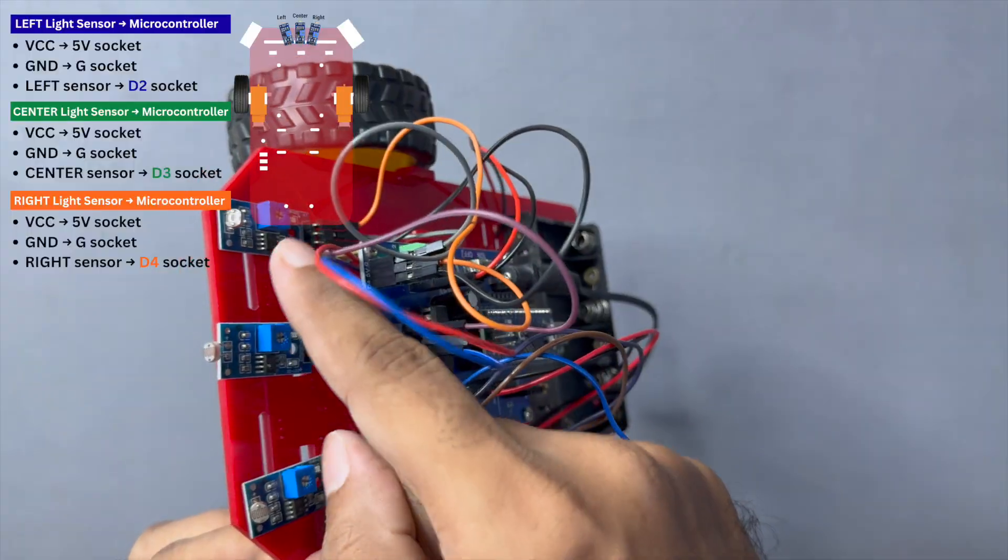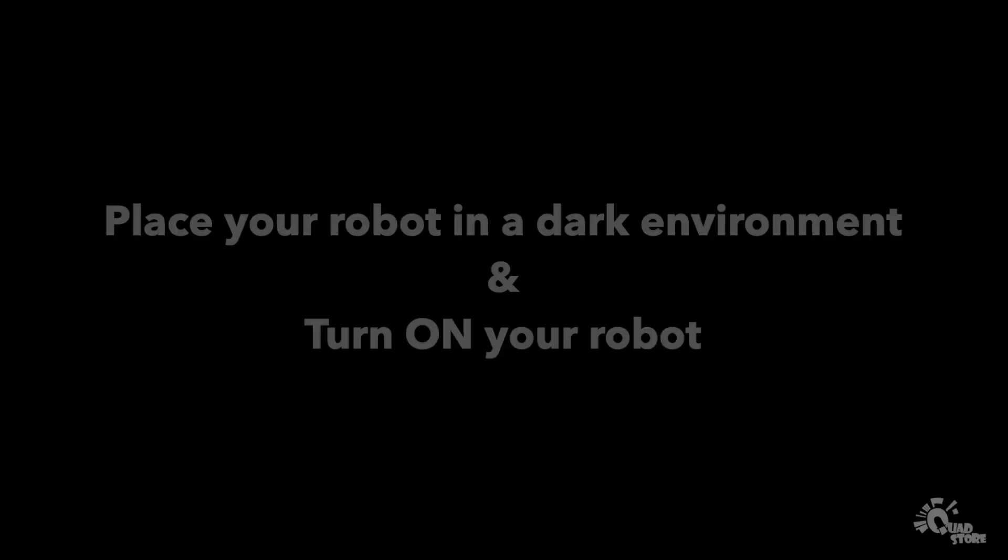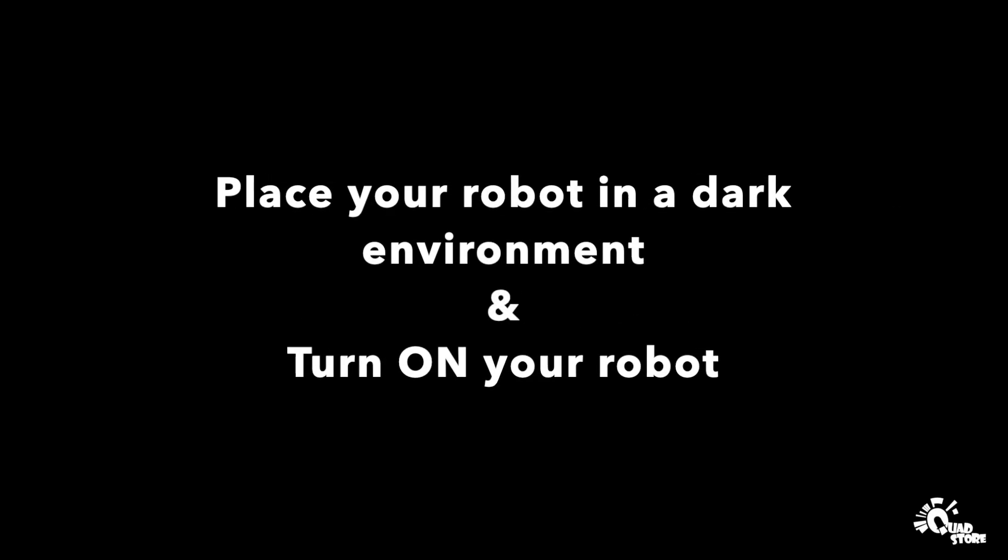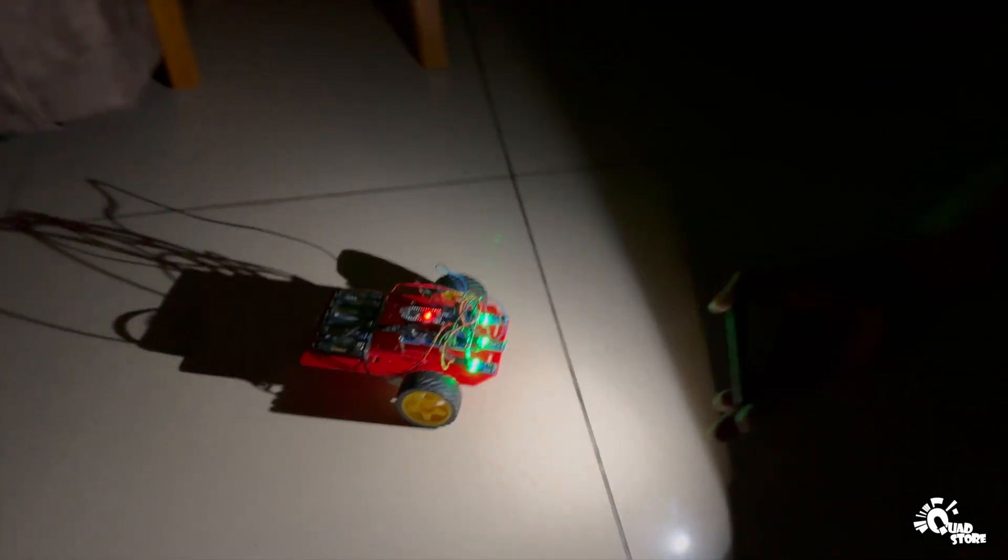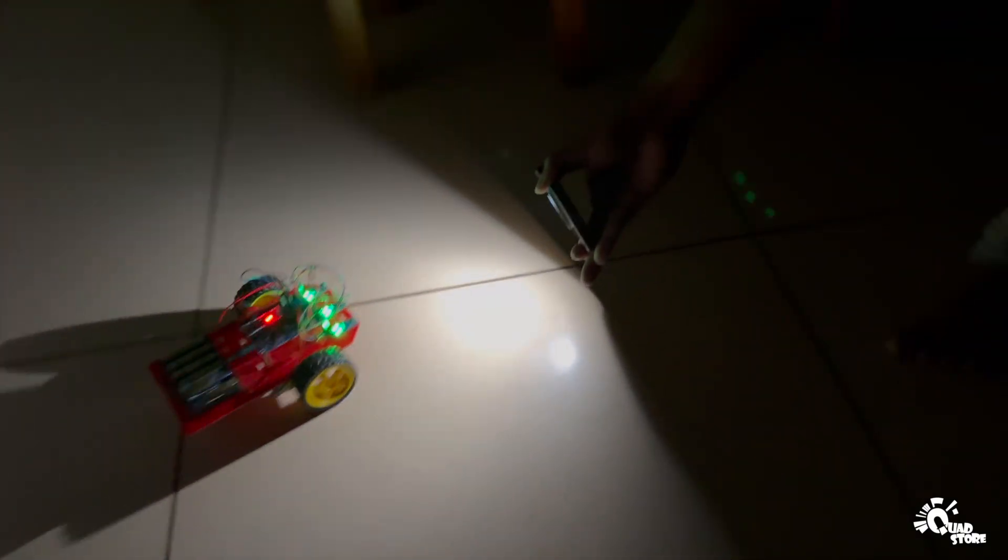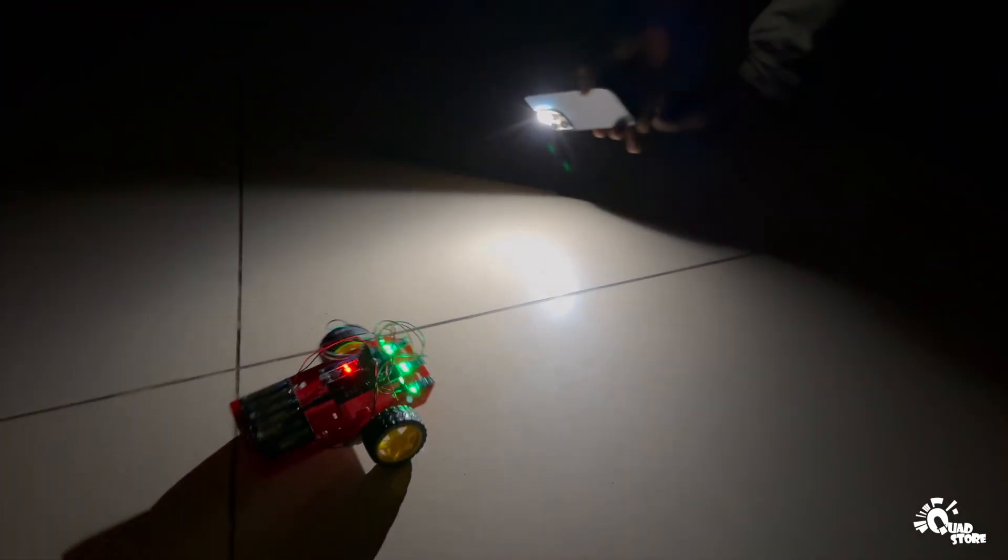Your light following robot is now ready to operate. Place the robot in a dark environment and turn it on. Point a light source toward it. The robot should start moving toward the light. To make the robot move straight forward, ensure the light falls on all three sensors.